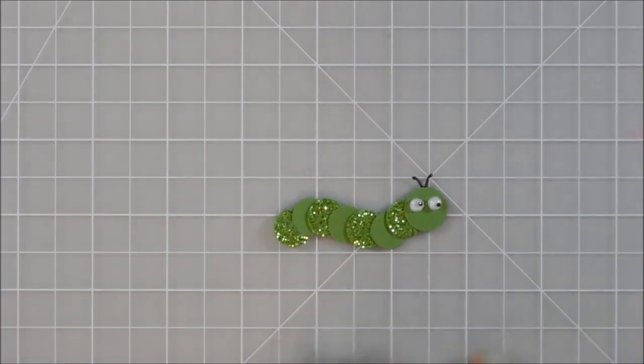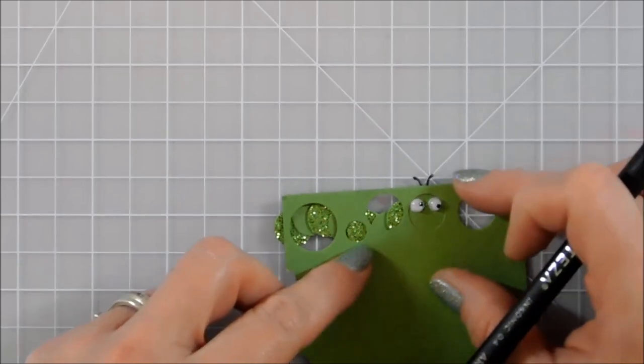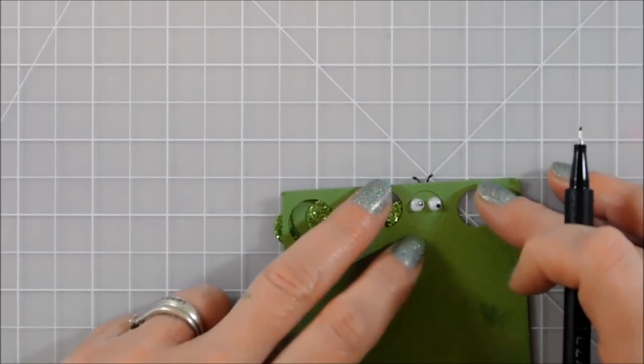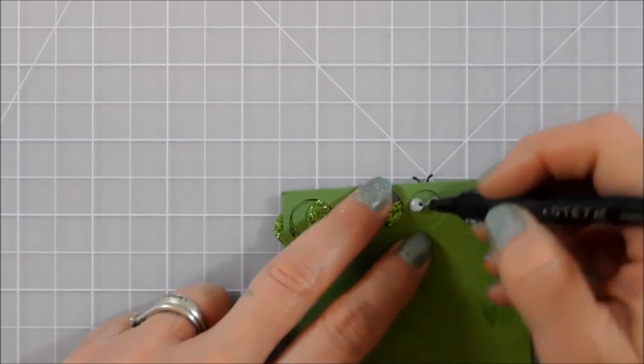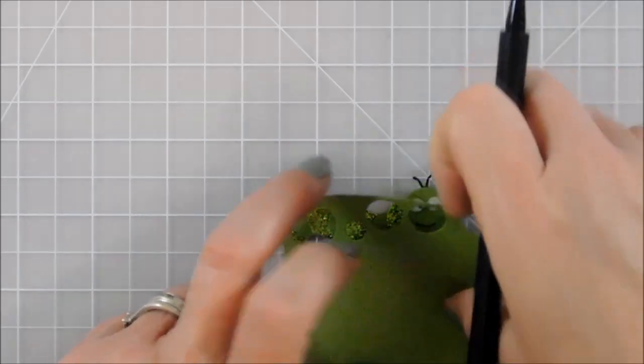And you can leave him right like that if you wanted to. I think that's adorable. But I want to put a little mouth on him with a little smile on his face. What I'm going to do is use the template of a smaller circle and I can just go right along that curve. And that makes the perfect little smile. I think that is so cute.